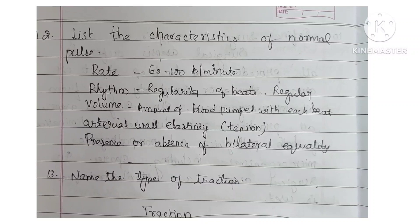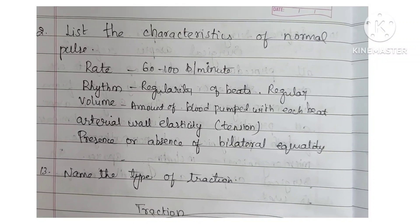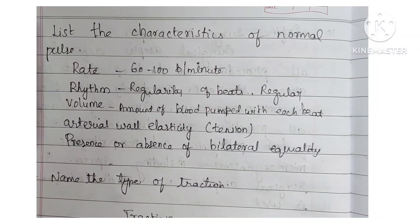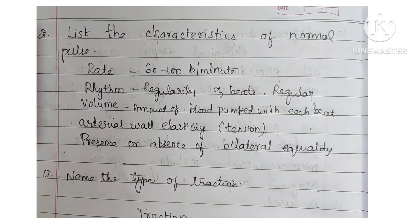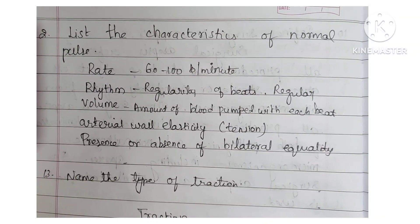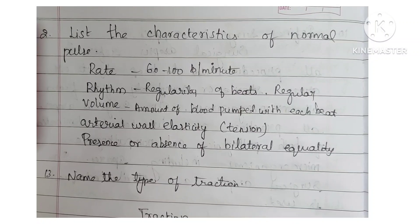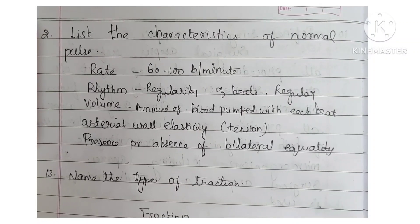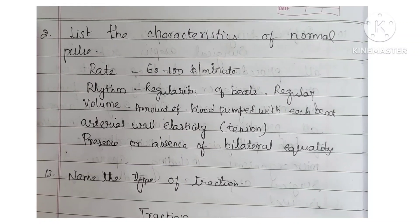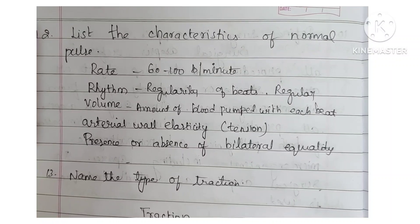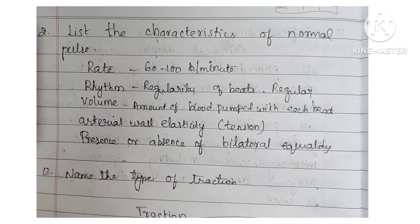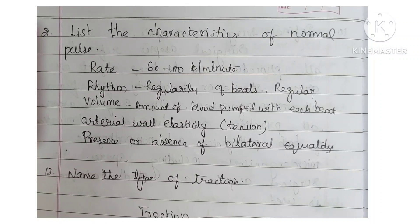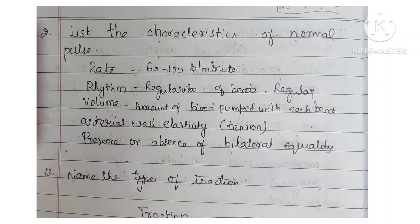List the characteristics of normal pulse. Rate is 60–100 beats per minute, rhythm is the regularity of beats which is regular, volume is the amount of blood pumped with each beat, arterial wall elasticity or tension, and presence or absence of bilateral equality. So the characteristics are: rate, rhythm, volume, tension, and bilateral equality.